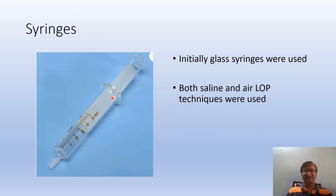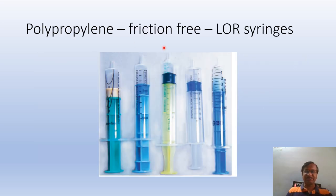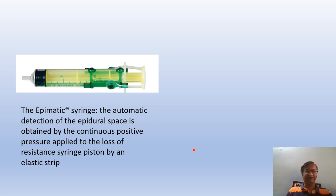Regarding epidural syringes: previously we used glass syringes, and both saline and air LOP (loss of pressure) techniques were used with glass syringes. These have gone out in favor of LOR syringes — polypropylene friction-free loss-of-resistance syringes. There are so many models and companies. The Epimatic syringe provides automatic detection of the epidural space: if you give continuous positive pressure, this elastic strip will release and automatically detect the epidural space.